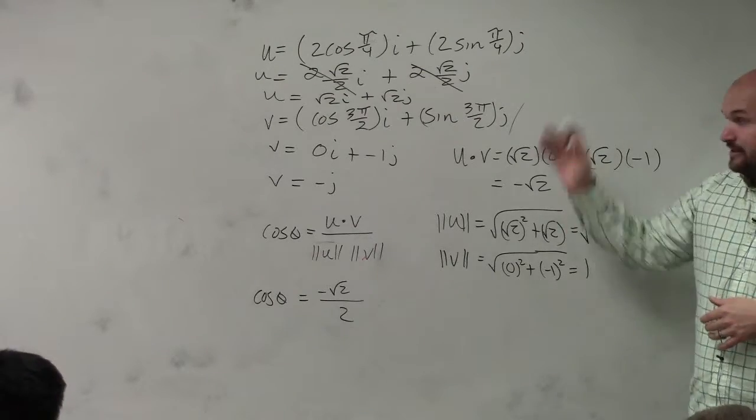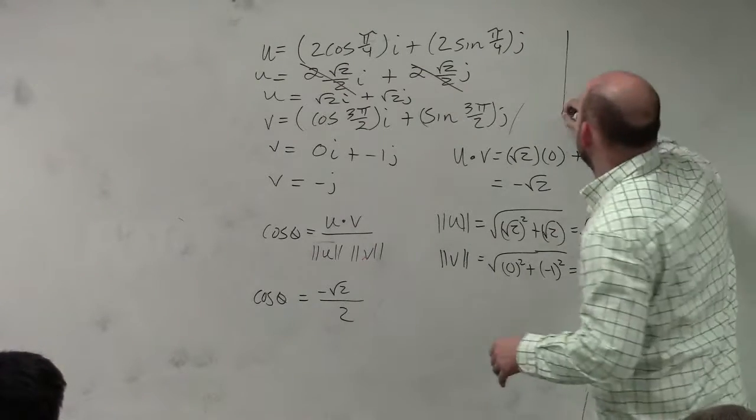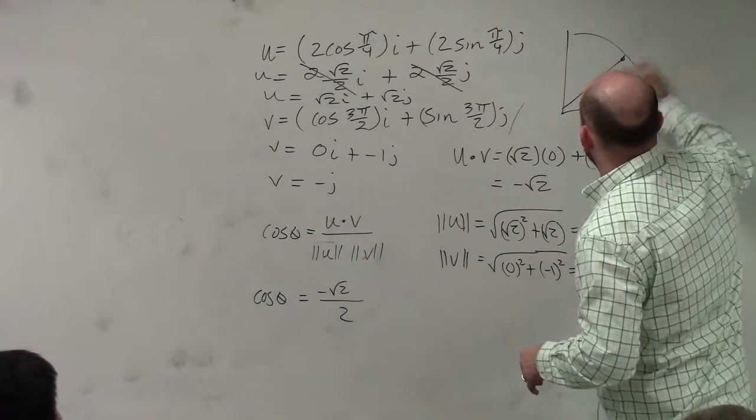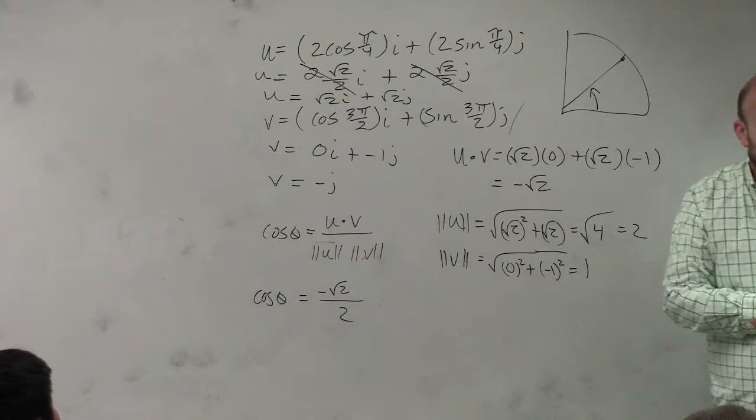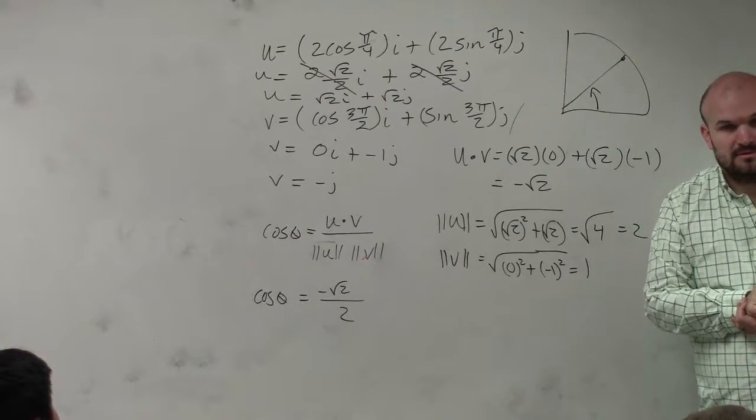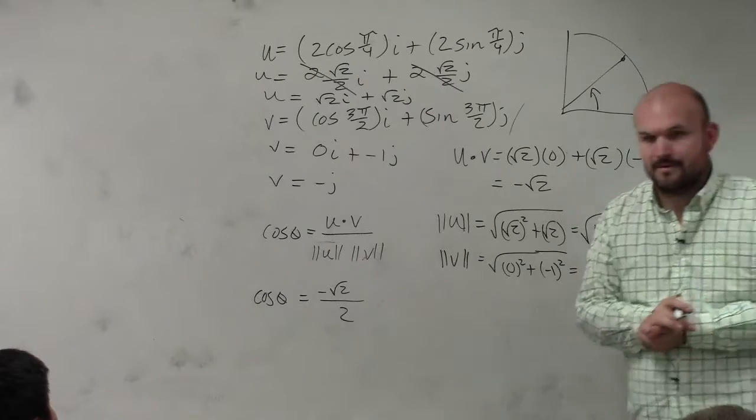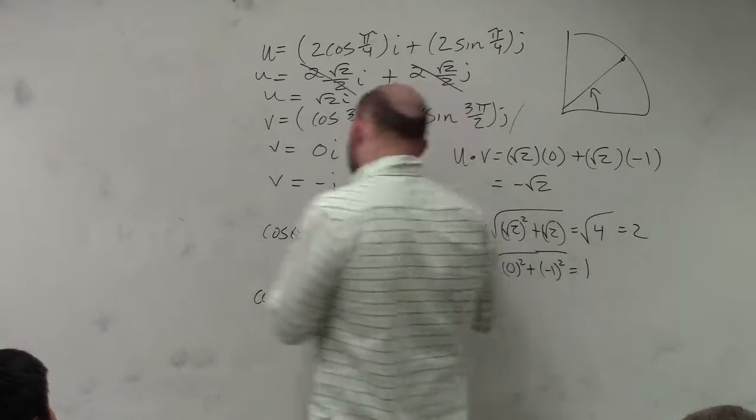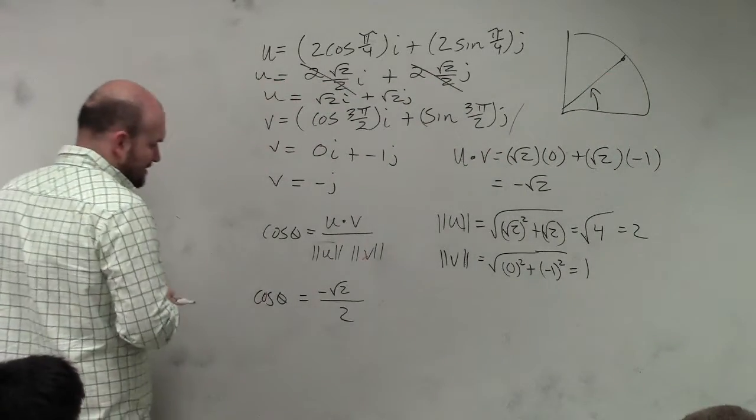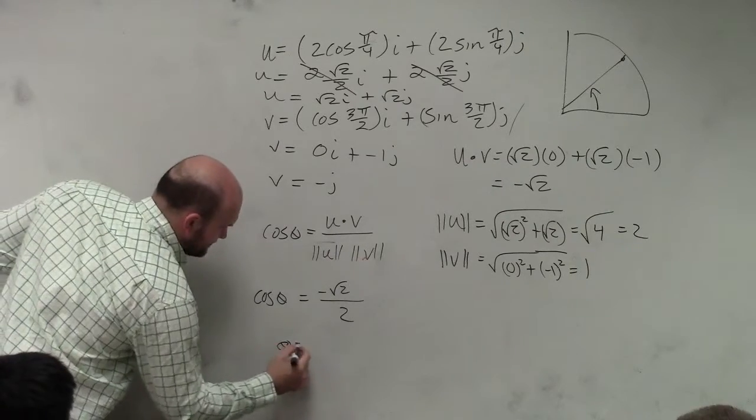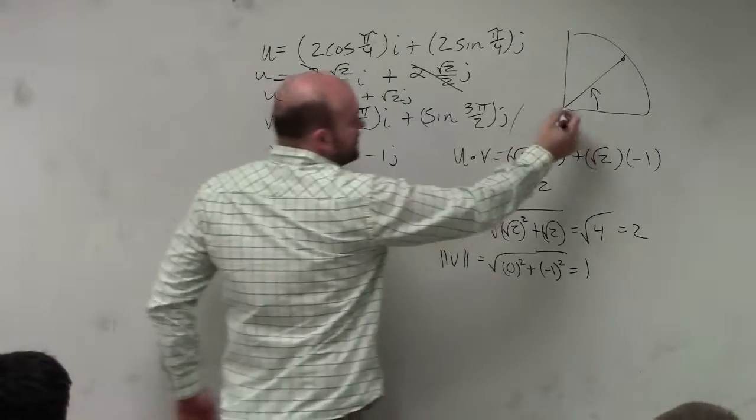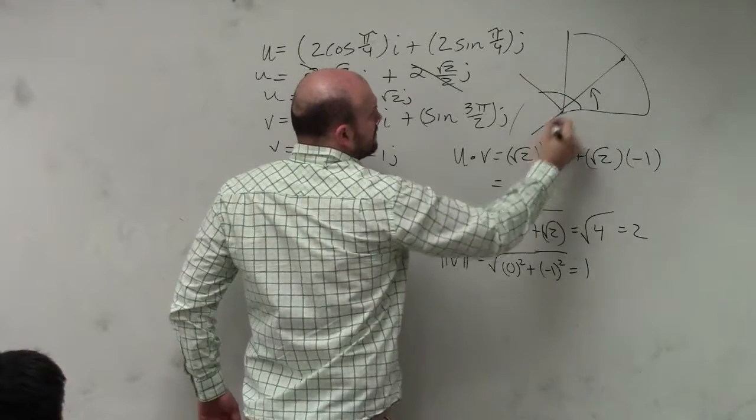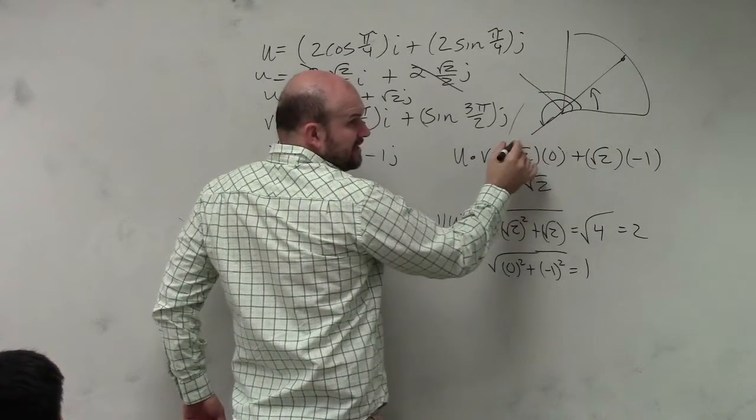Well, 45 degrees gives me positive square root of 2 over 2. So I need a negative square root of 2 over 2. Let's do in radians, which is, yes, that's correct, 3 pi over 4. But it also could be this one, right? Right? Wouldn't you guys agree with that?